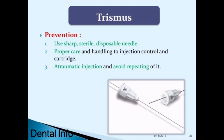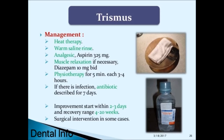Prevention of trismus: use sharp sterile disposable needles, proper care and handling of injection control and cartridge, and perform atraumatic injections avoiding repetition. Management includes heat therapy, warm saline rinse, analgesics (aspirin 325 mg), muscle relaxants if necessary (diazepam 10 mg BID), and physiotherapy for 5 minutes every 3–4 hours. If infection is present, antibiotics should be prescribed for 7 days. Improvement starts within 2–3 days; recovery ranges from 4 to 20 weeks. Surgical intervention may be required in some cases.